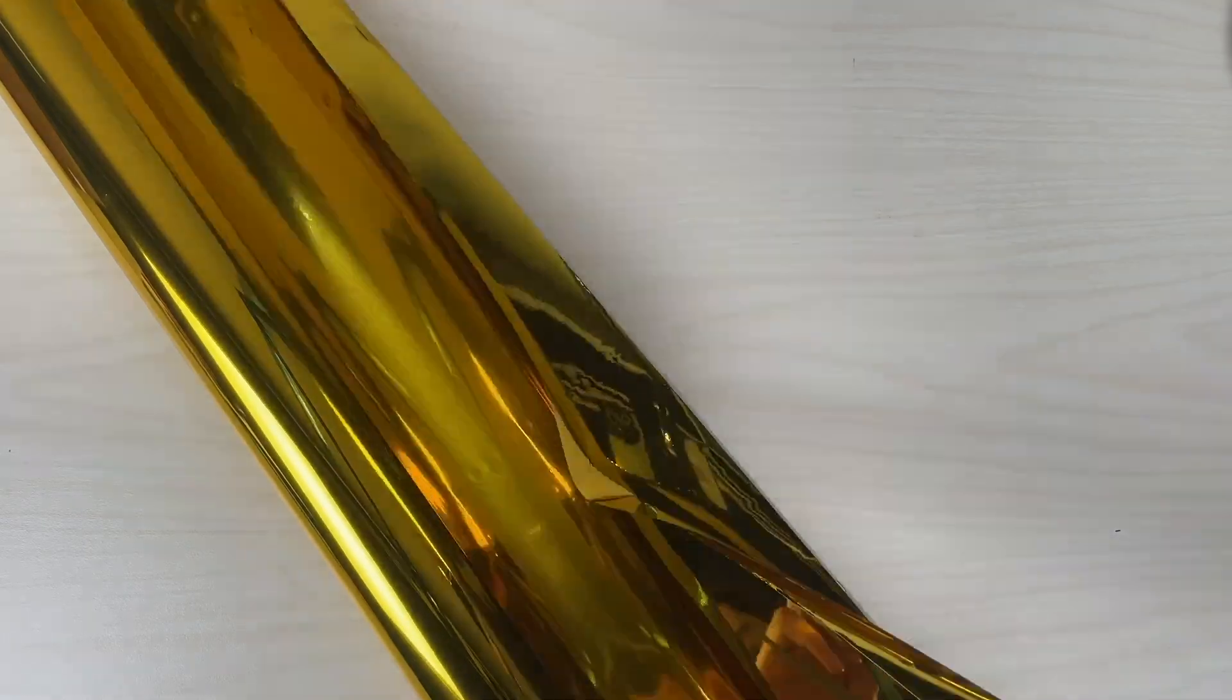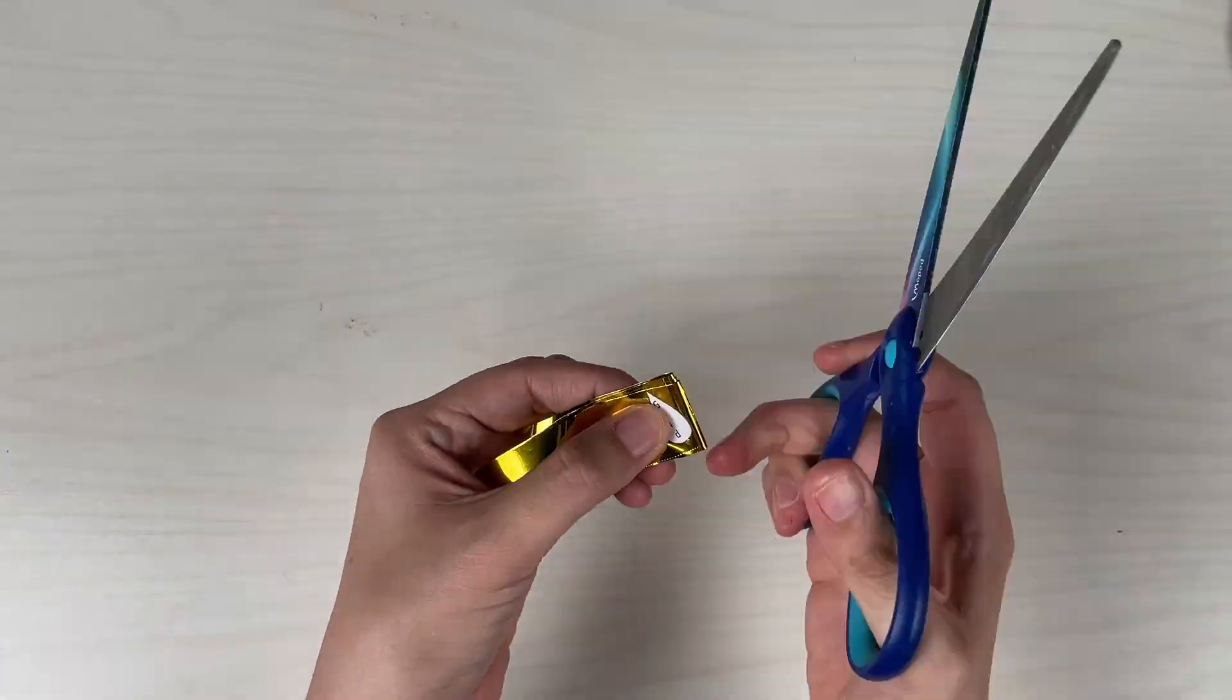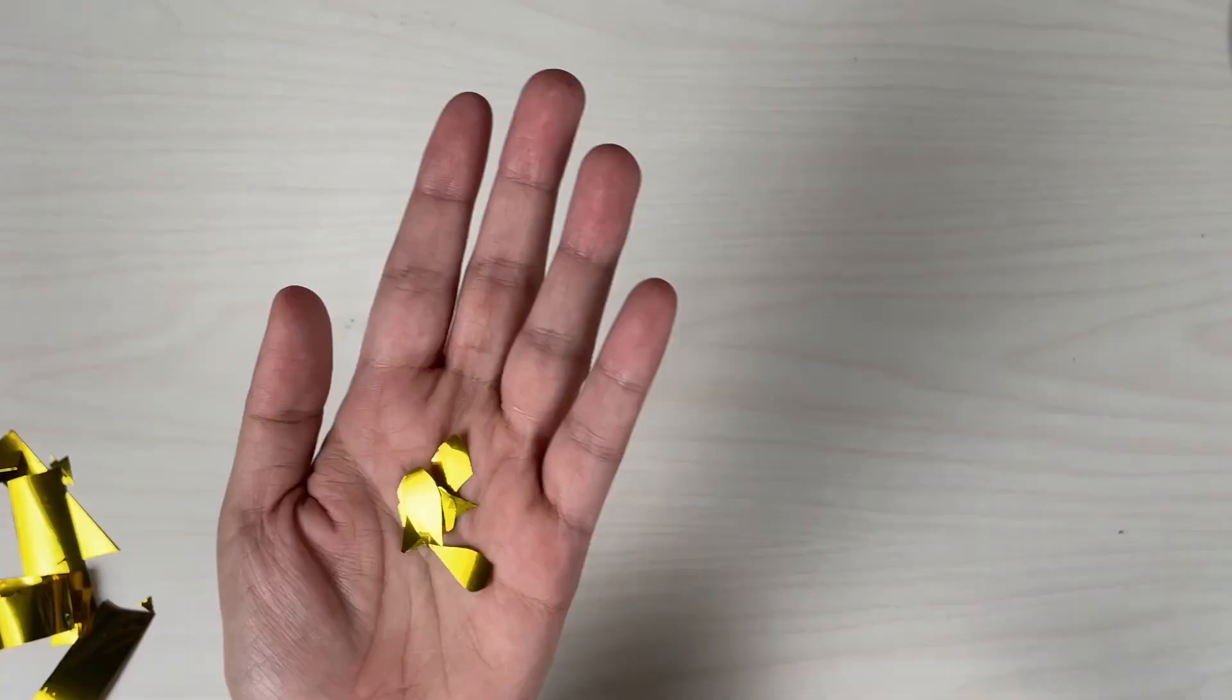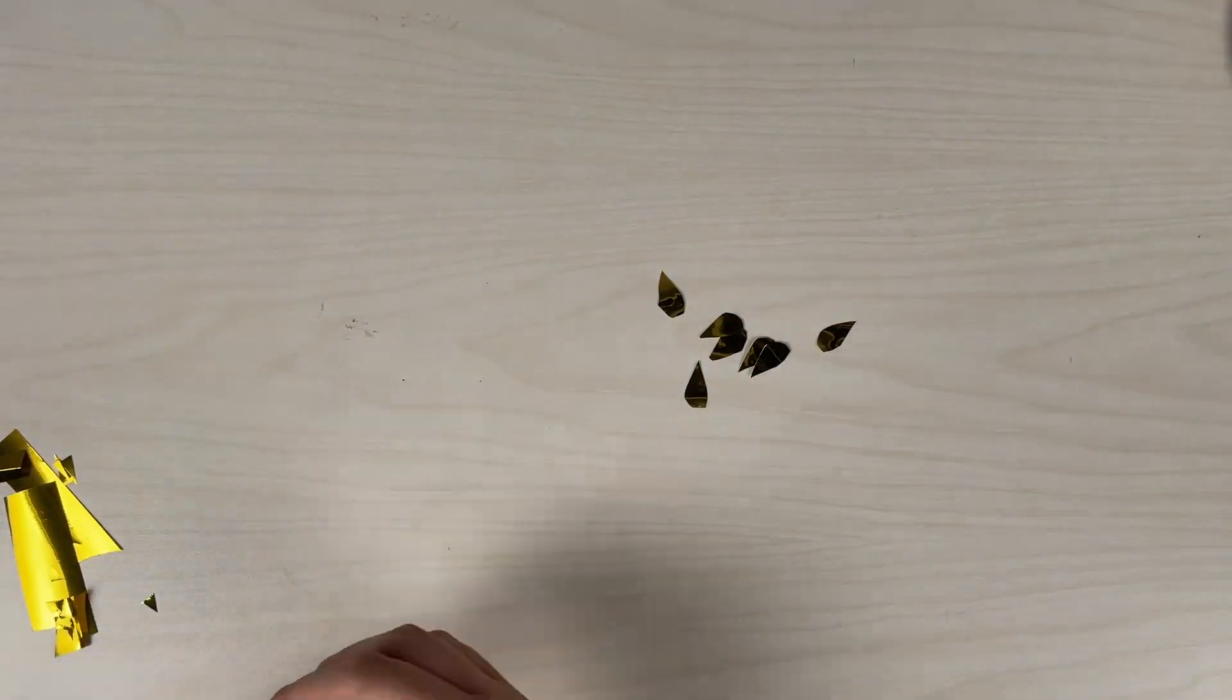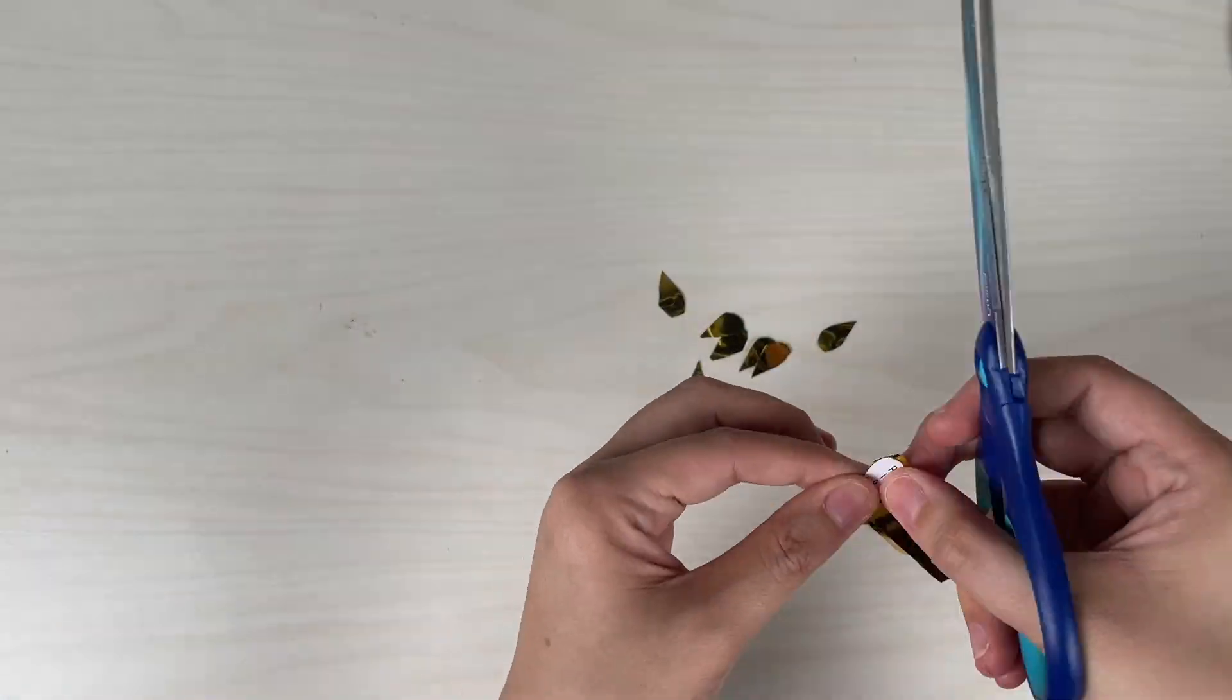And then of course, last but not least, we're just gonna cut a strip of gold foil and using the smallest flame template, I'm just gonna trace and cut. This does not have to be perfect because this is a candle's flame.